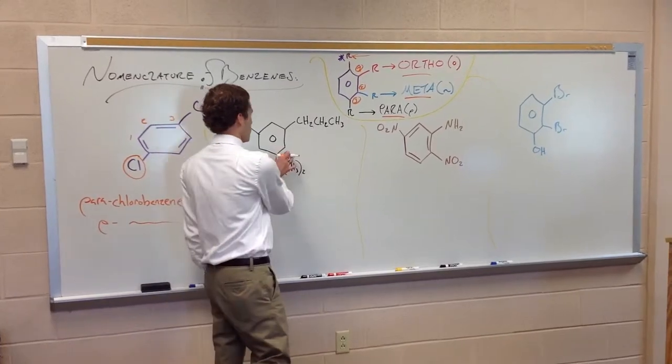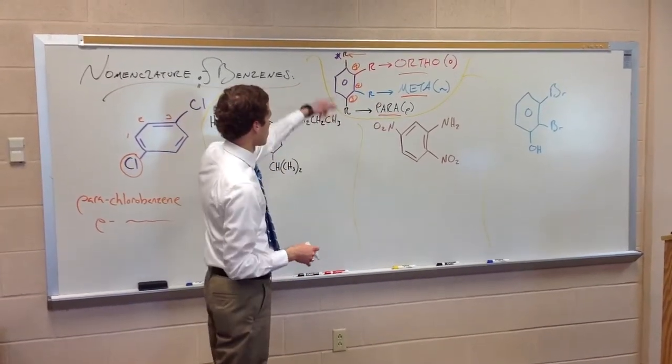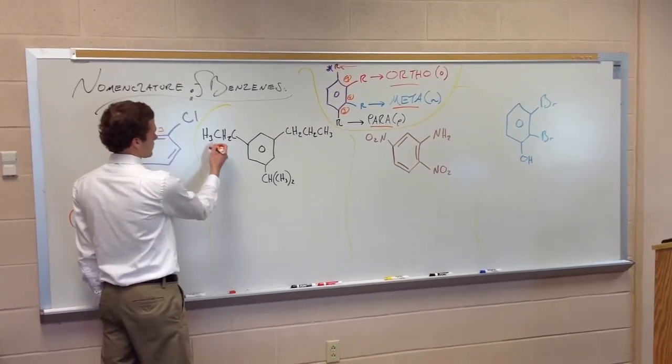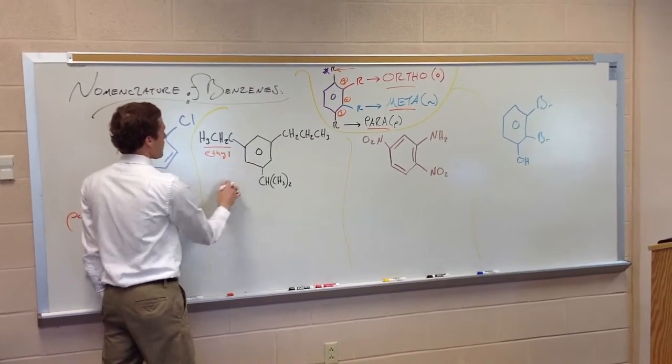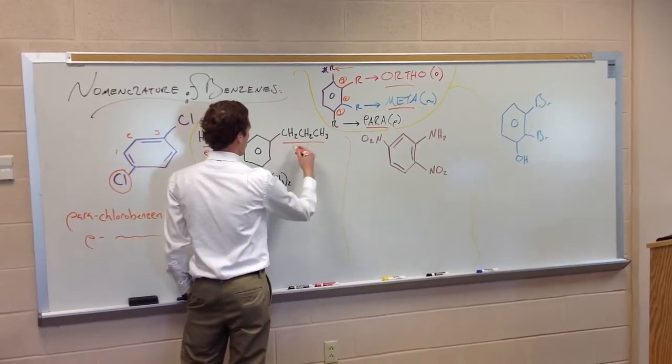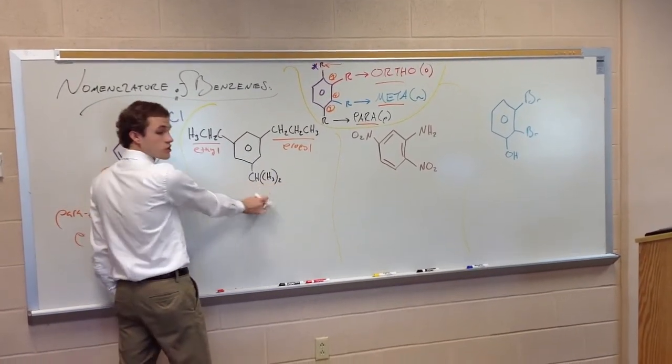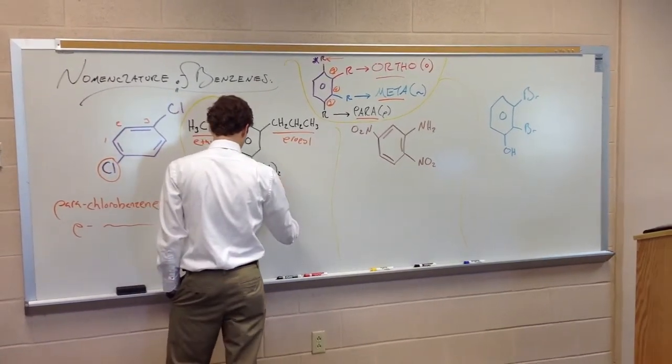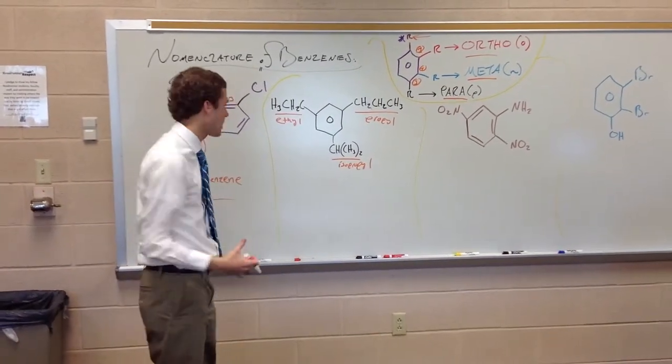Alright, now let's look at a compound where we're not going to be able to use this type of system up here. We're going to have to actually number our carbons. So we've got a benzene here with, let's see, this is an ethyl group. We have three carbons, this is a propyl group. And we have CH3-2, which makes this an isopropyl group.